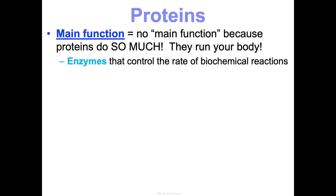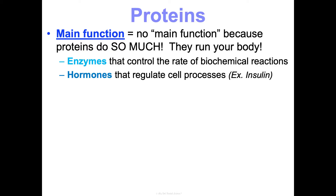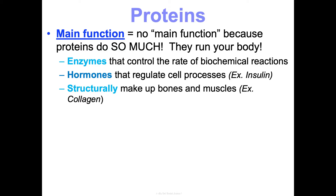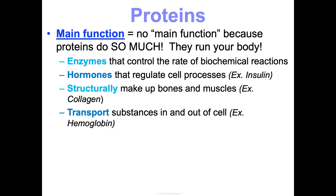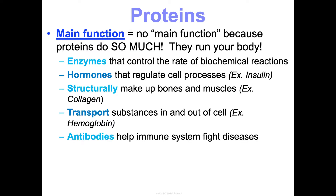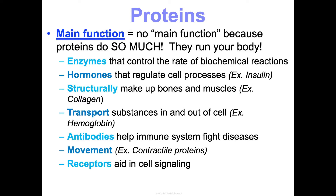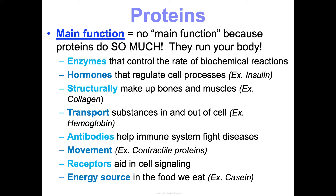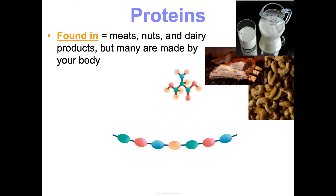Proteins are enzymes that control the rate of biochemical reactions. They're hormones that regulate cell processes, like insulin regulating blood sugar. Structurally, they make up bones and muscles — think collagen. They help transport substances in and out of cells; hemoglobin transports oxygen to cells. Proteins are antibodies that help our immune system fight disease. They enable movement through contractile proteins, and serve as receptors on the cell membrane to receive signals. They're also a source of energy in food like meats, nuts, legumes, and dairy.